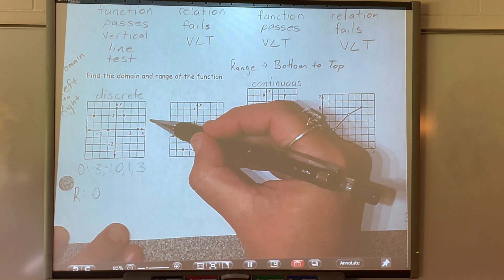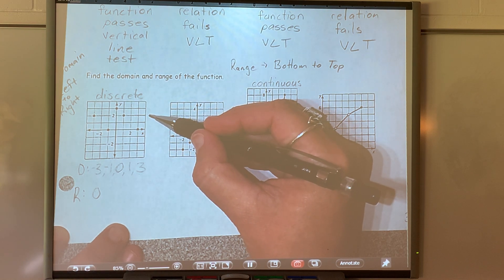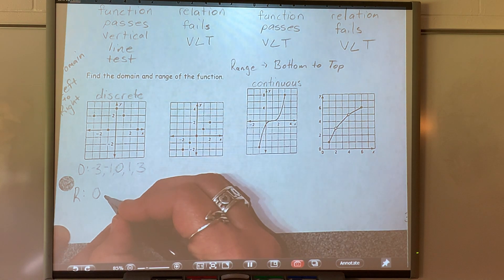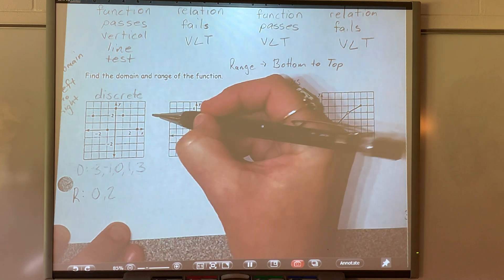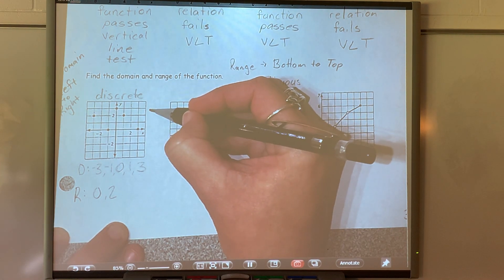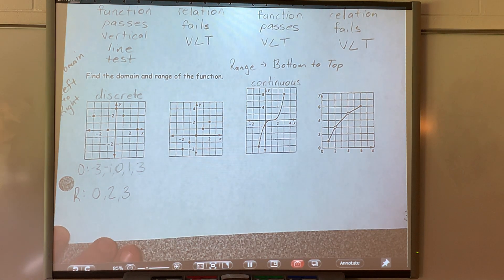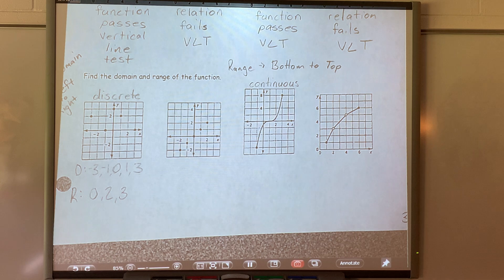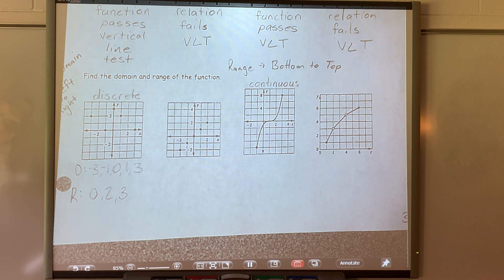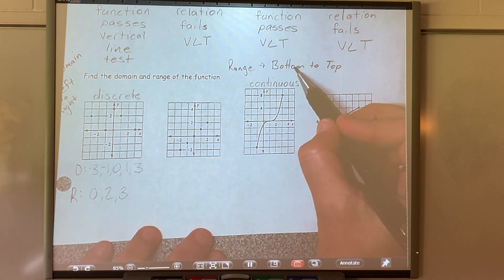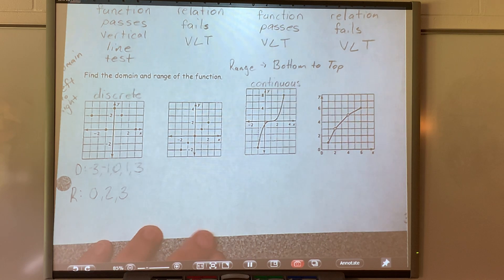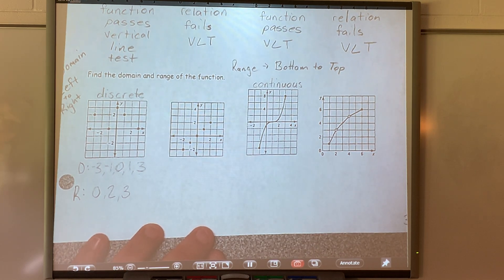What is the next place you see a point? Two. Then three. Those are your y values. You've got to know the difference between x and y. Bottom to the top. X is left to right, y is from bottom to top. You have to read it that way.